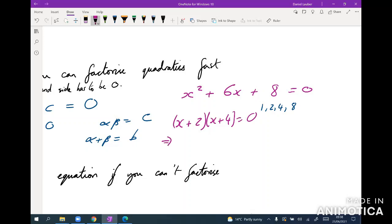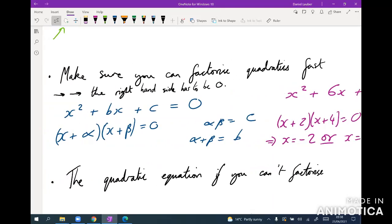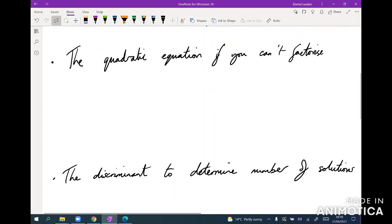And then that tells us that the actual solutions are the opposite of what we've written down in the bracket. So x equals minus 2 or x equals minus 4. Make sure you're very comfortable in factorizing quadratics. There's plenty of materials online if you need practice with that.